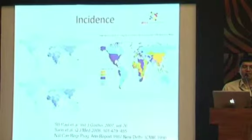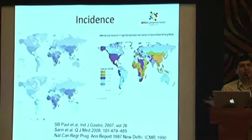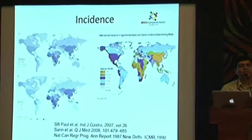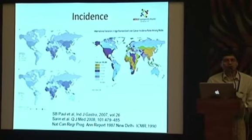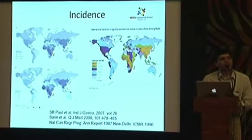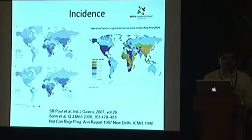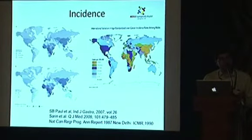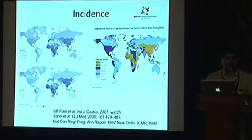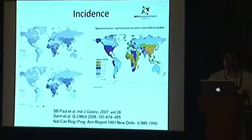The HCC pattern is generally dependent on Hepatitis B and C prevalence in different parts of the world. If you talk about the Indian perspective, Hepatitis C in India is low incidence, at about 1.6%. Hepatitis B is intermediate incidence, and hepatocellular carcinoma is a low incidence disease in our country.